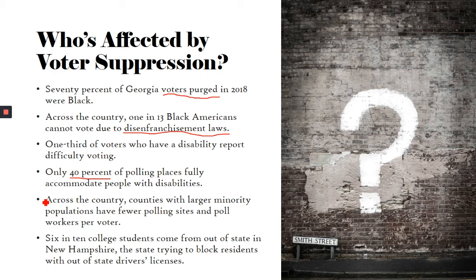Across the country, counties with larger minority populations have fewer polling sites and poll workers per voter. I saw this growing up — in my white suburb of Detroit, Sterling Heights, there were lots of places to vote and poll workers, but in Detroit that wasn't the case. Lastly, 6 in 10 college students in New Hampshire come from out-of-state, and yet the state was trying to block residents with out-of-state driver's licenses from voting — something that really affects young people attending college.